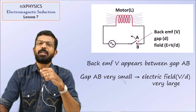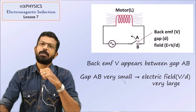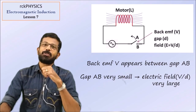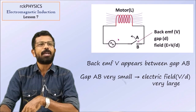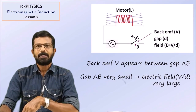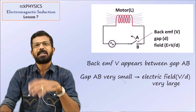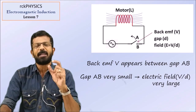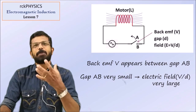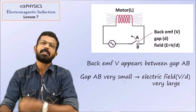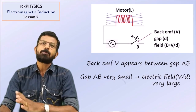As the electric field value is very large, and air has a dielectric strength of 10 raised to 6 volt per meter — if the field value in the gap exceeds that, the air becomes ionized and will conduct. Conduction means a large amount of charge flow. This means electric discharge, and that discharge appears as a spark.